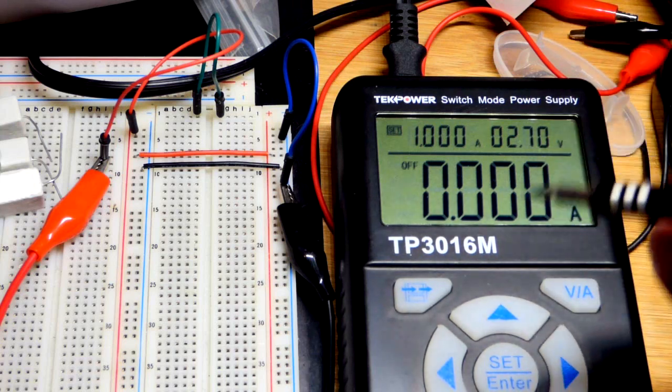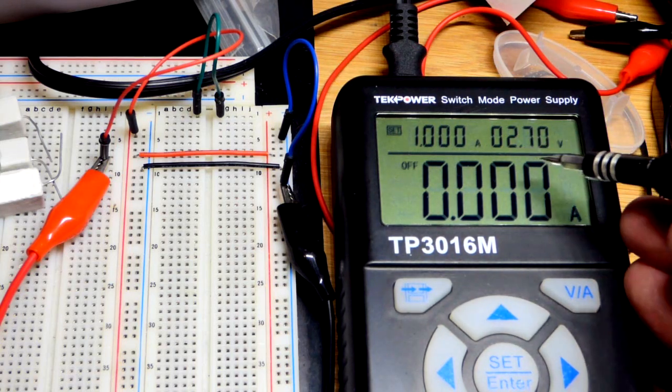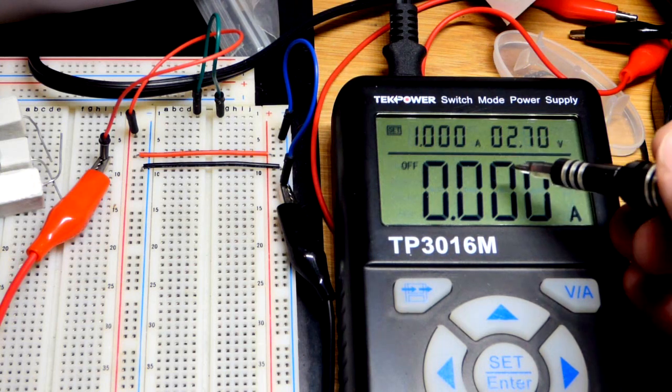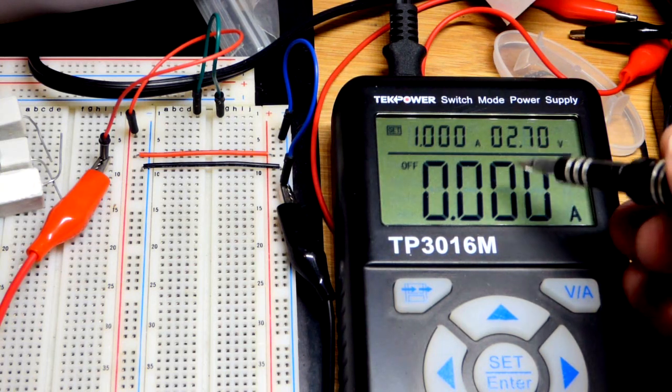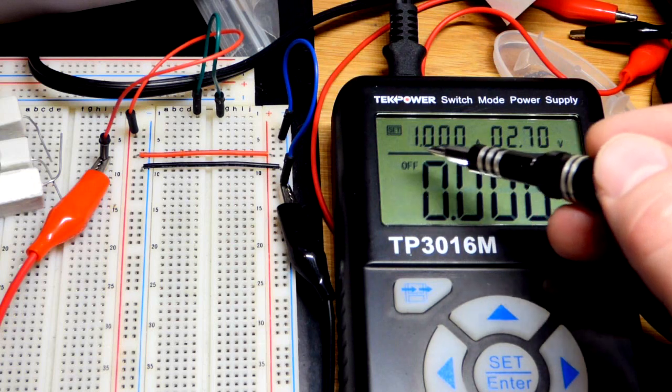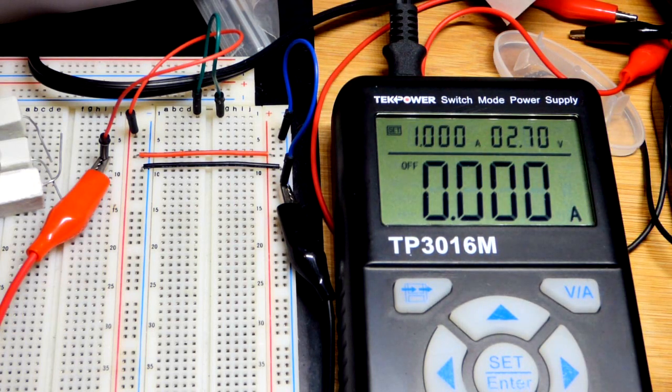They'll charge to whatever voltage you charge them to, but above 2.7 volts you can expect damage to them. So you don't want to charge them above 2.7 volts. And it's nice to charge them at 1 amp of current.